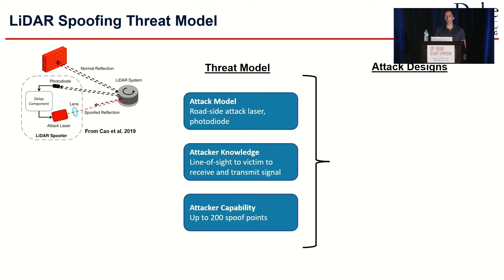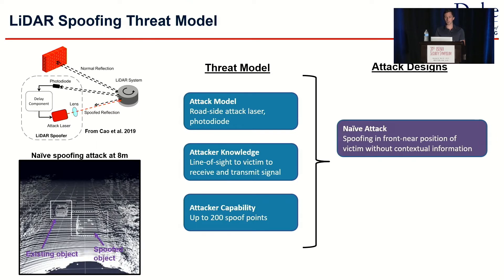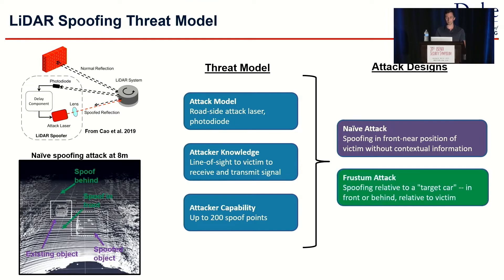Given this threat model, you can come up with a couple of different attacker designs. The first is a naive attack, which has been proposed in prior works. The naive attack is defined as spoofing at front-near positions of the victim without any additional contextual information, with the goal of making the victim perform evasive maneuvers like emergency braking or obstacle avoidance unnecessarily. The second attack, which we've discovered, is spoofing relative to an existing car in the scene — we call that the frustum attack.